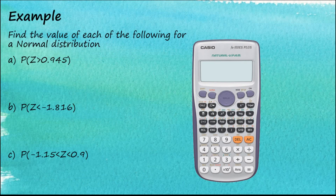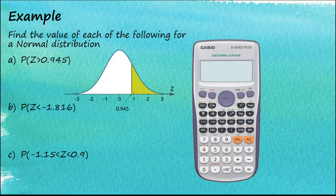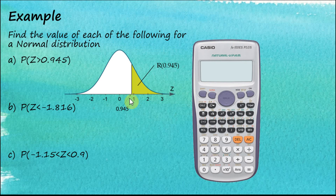Now let's look at some examples. We are asked to find the values for a normal distribution. The first one is to find P(Z > 0.945). On the normal distribution curve, 0.945 is somewhere to the right of centre, and we would like to find the area from 0.945 to positive infinity.